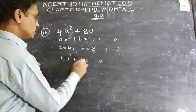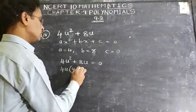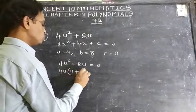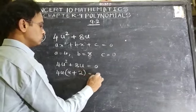What is common in this? 4u is common. Inside the bracket, u plus 2. So 4u(u + 2) = 0.